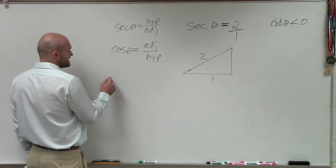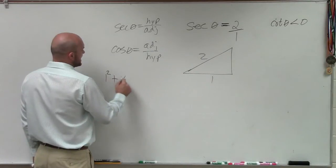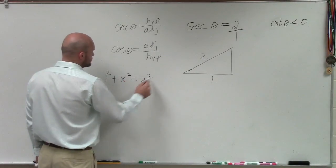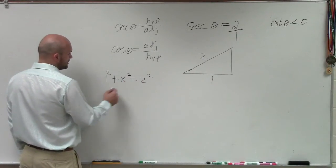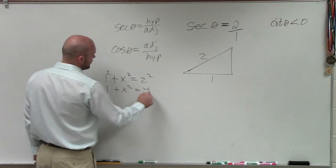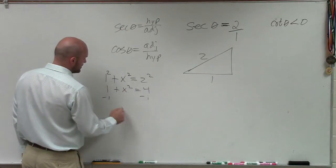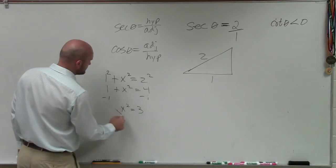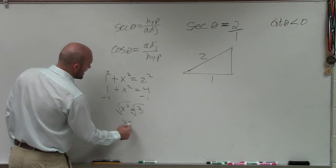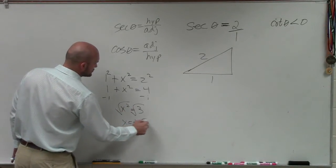So we say 1 squared plus x squared equals 2 squared. So therefore, 1 plus x squared equals 4 minus 1 minus 1. x squared equals 3. Square root, square root. x equals plus or minus the square root of 3.